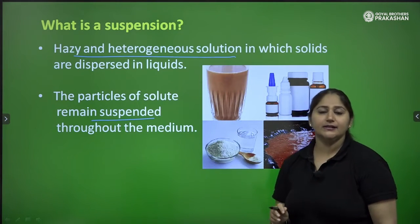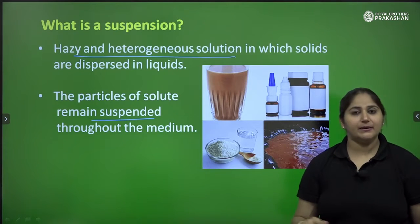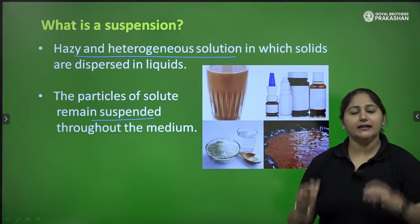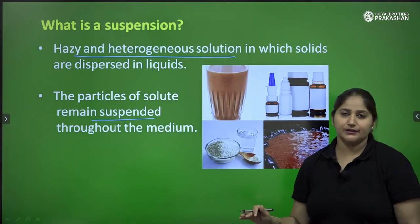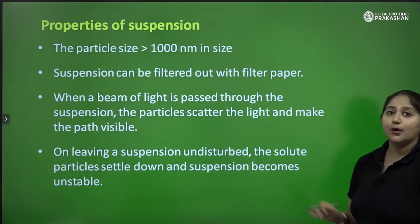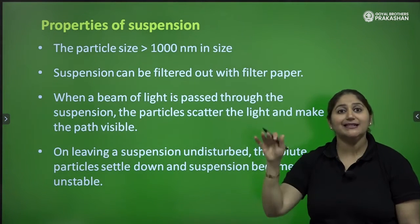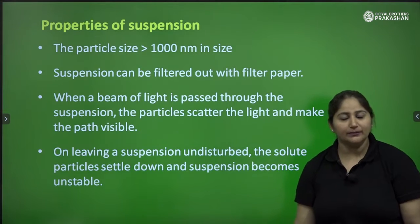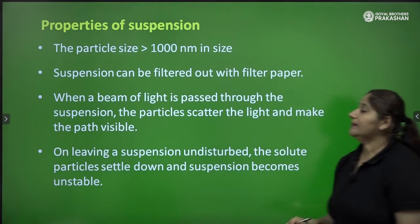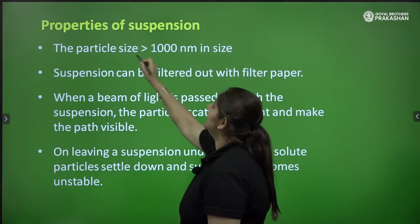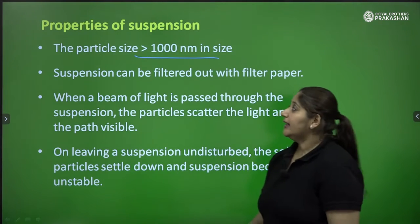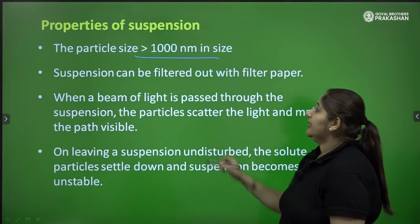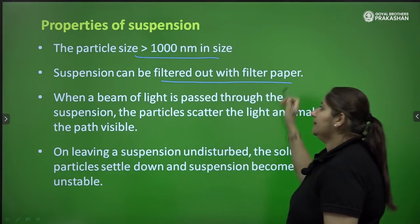The particles of solutes remain suspended through the medium — that is, they are not stable. They can settle at the bottom when left undisturbed. So what are the properties of suspension? Why are they unstable? Why do they settle at the bottom? They settle at the bottom because their particle size is very large — it is greater than 1000 nanometers.